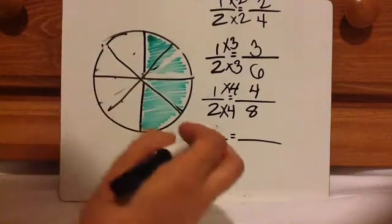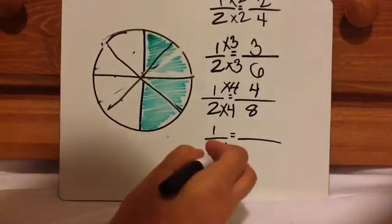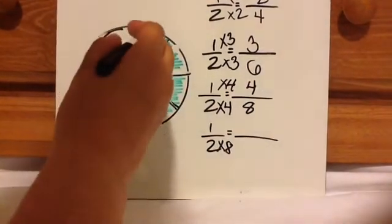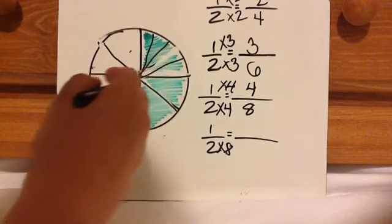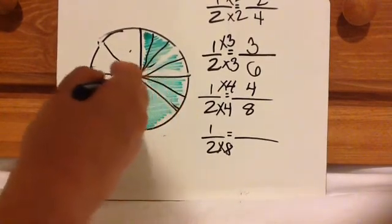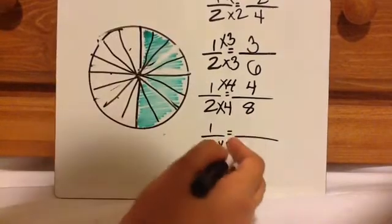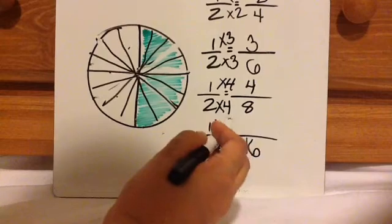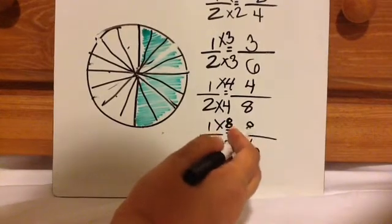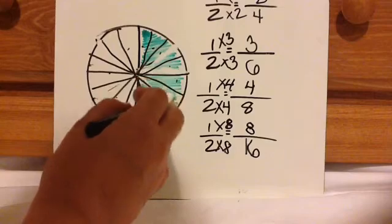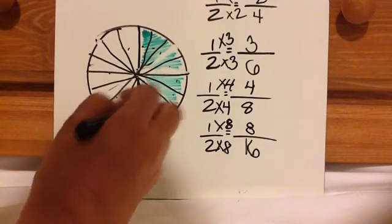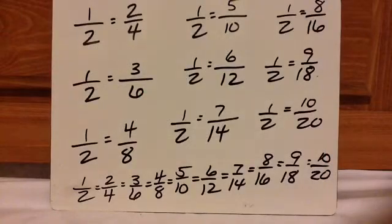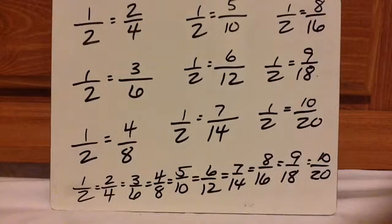Let's do one more — timesing it by eight. This is going to get a little crazy — sixteen pieces. So one times eight would be eight pieces out of sixteen pieces. Now let's look at different fractions equivalent to one-half, one piece at a time.